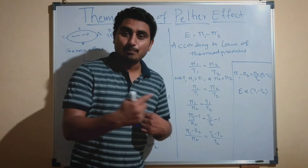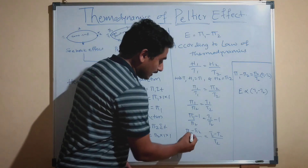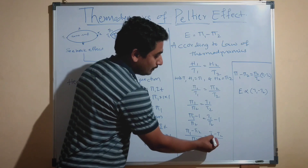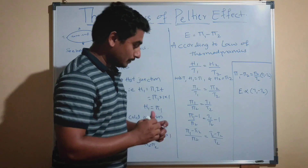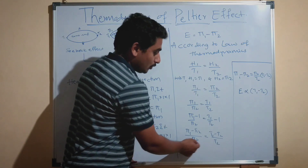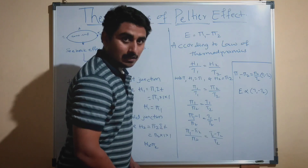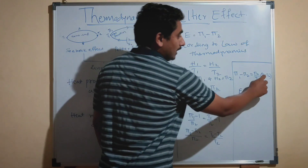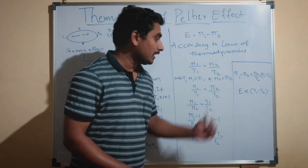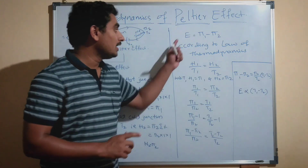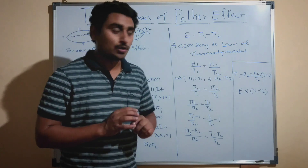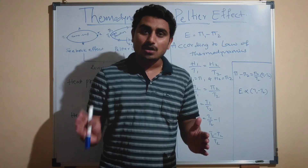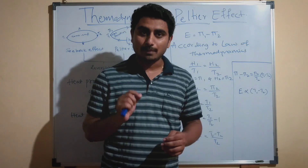Subtracting 1 from both sides and after mathematical simplification, we get (Pi1 − Pi2) / Pi2 = (T1 − T2) / T2. Rearranging, Pi1 − Pi2 = (Pi2 / T2) × (T1 − T2). Thus, Pi1 − Pi2, which is the EMF set up in the circuit, is directly proportional to the temperature difference between the hot junction and cold junction of the thermocouple.